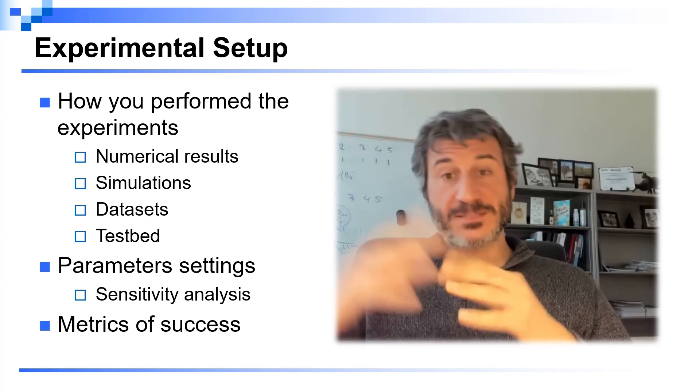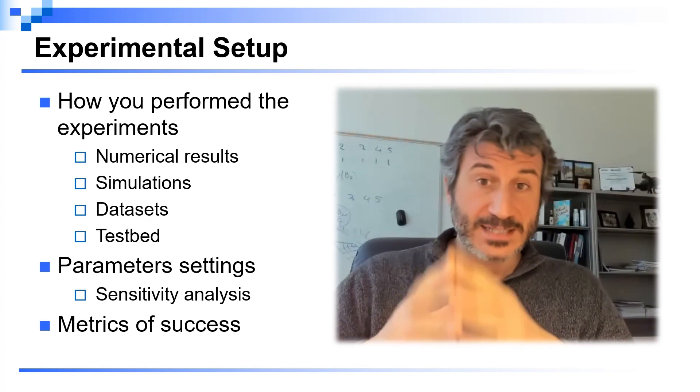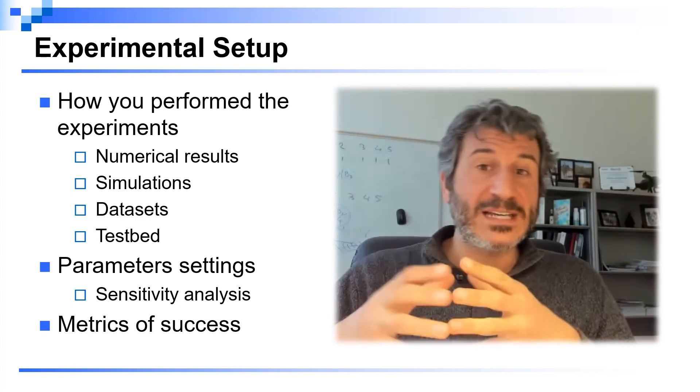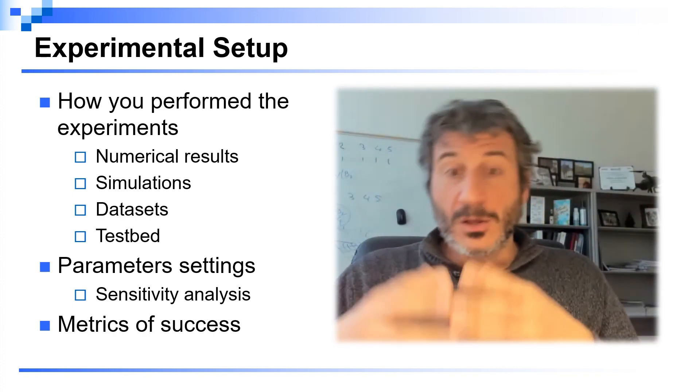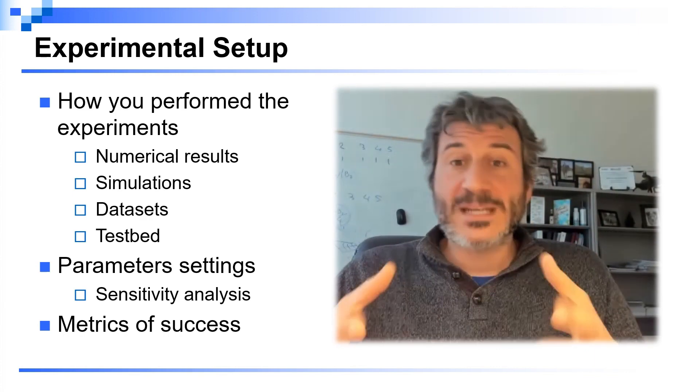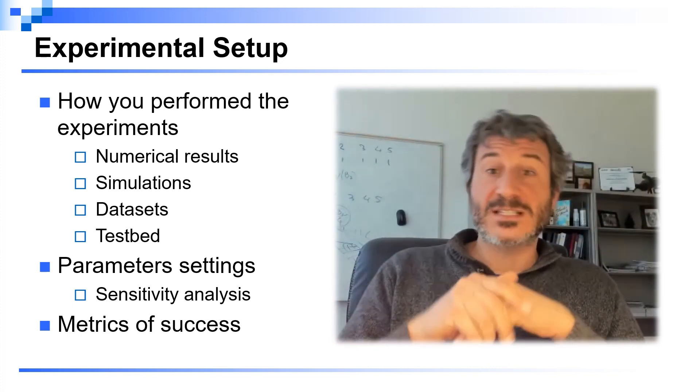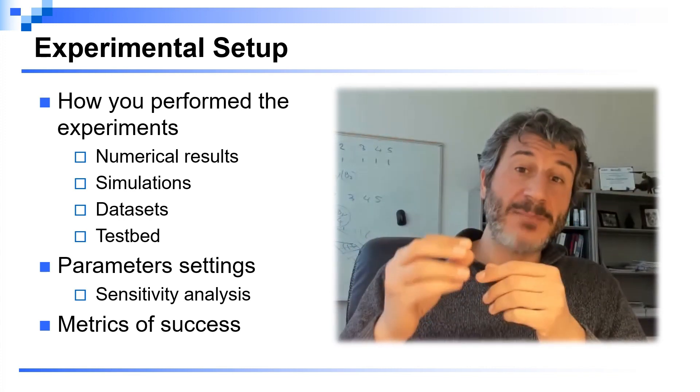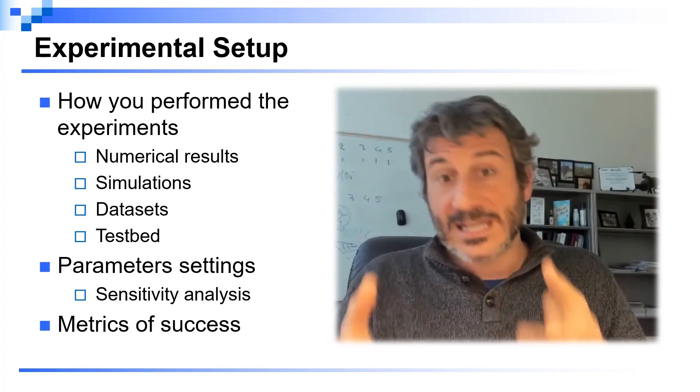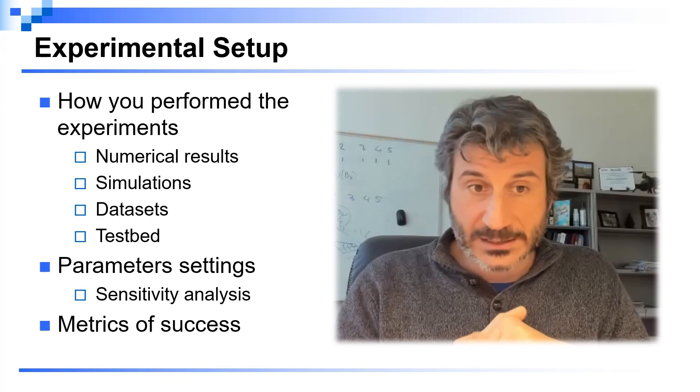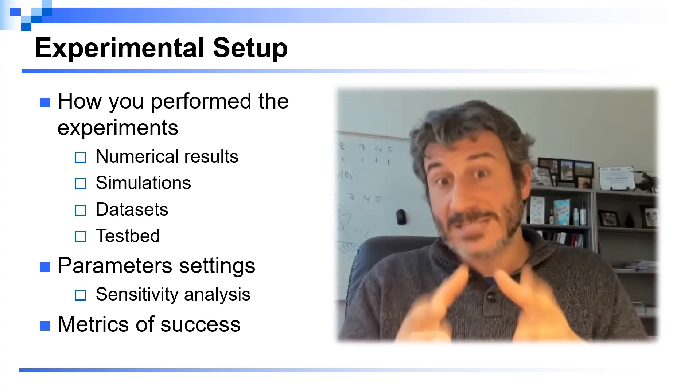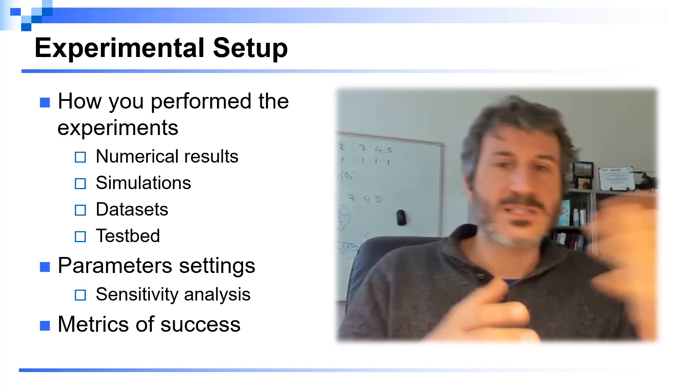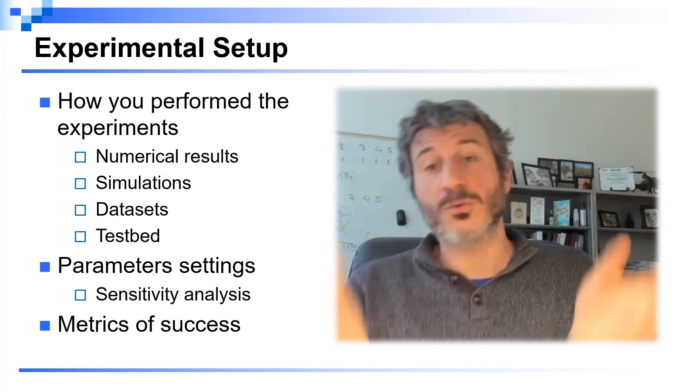Another fundamental subsection is the experimental setup. Here you should explain how you performed the experiments. At the highest level of abstraction we find numerical results—you implement your solution in a computer program and run numerical experiments. At the next step we have simulations, which tend to be more realistic because they include more aspects of the environment. You can make this even more realistic by integrating them with real datasets. And then at the highest level of realism you find actual testbed—implementing your solution on real devices. Sometimes in a paper you may combine simulation with smaller testbed experiments to provide a more comprehensive evaluation.